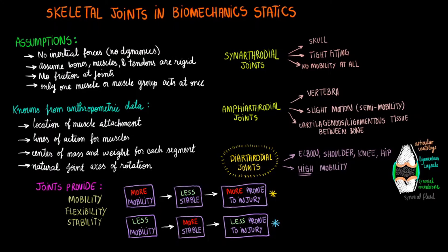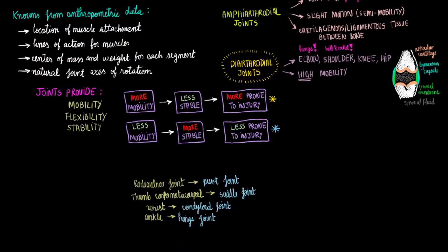There will be multiple kinds of diarthrodial joints in our bodies. For example, the elbow joint is a hinge joint, the shoulder joint is a ball and socket joint, and the vertebral facets are gliding joints. You also have the radial ulnar joint as a pivot joint, the thumb carpometacarpal as a saddle joint, the wrist as a condyloid joint, and the ankle as a hinge joint.